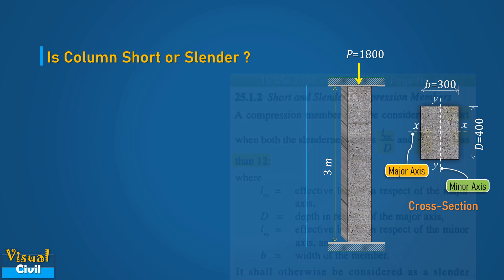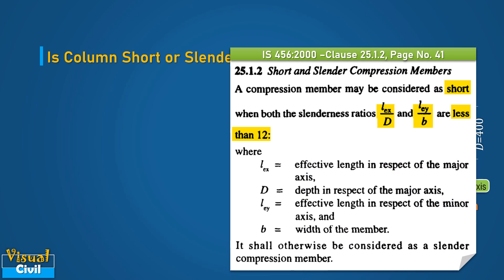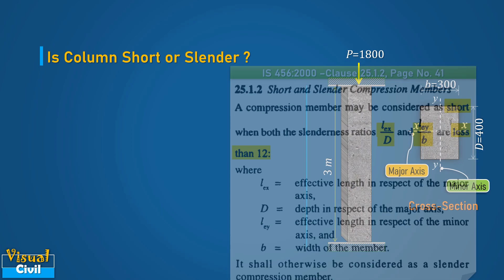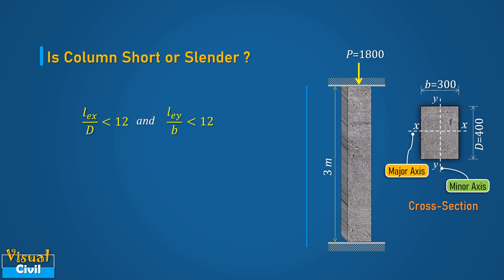As per Clause 25.1.2 of IS456-2000, a column member may be considered as short when both slenderness ratios LEX by D and LEY by B are less than 12. Where LEX is the effective length in respect of the major axis, LEY is the effective length in respect of the minor axis, D is the depth of column in respect of the major axis, and B is the width of column.